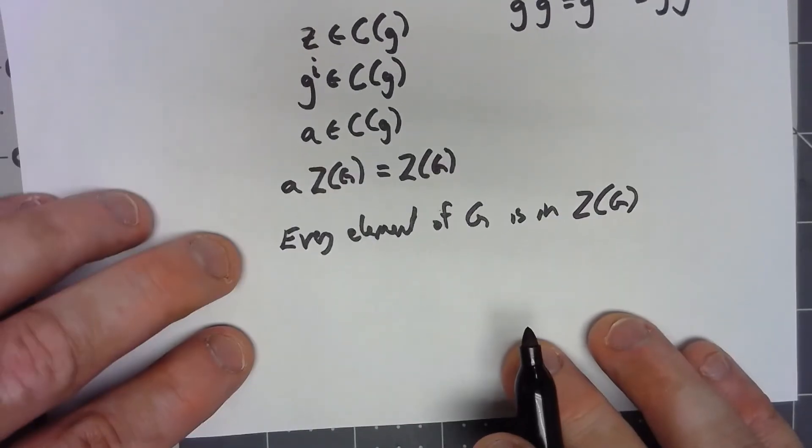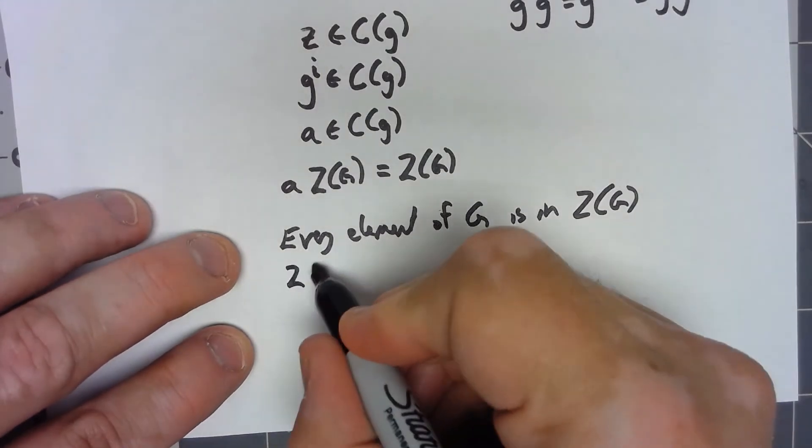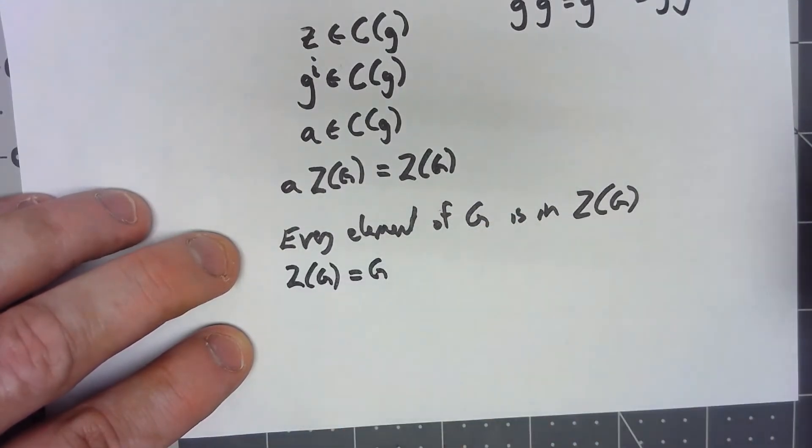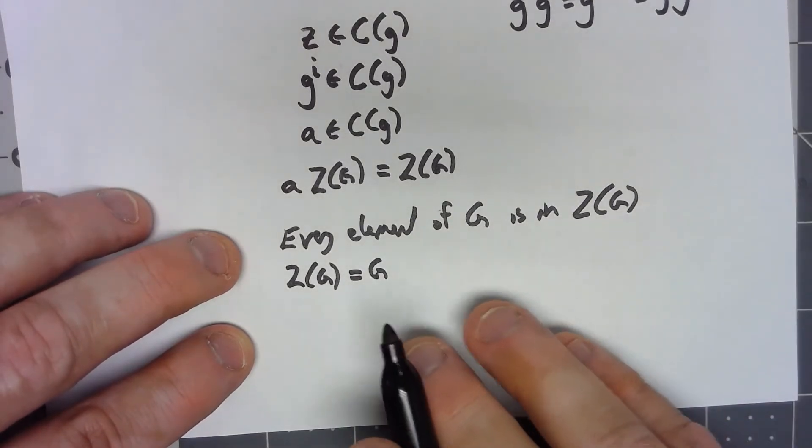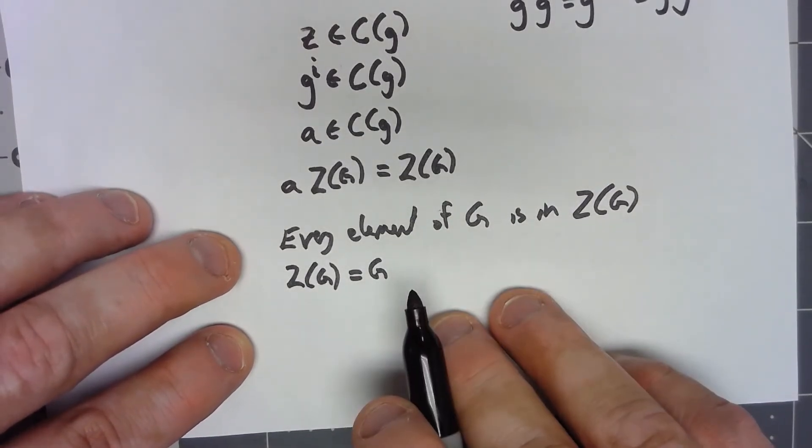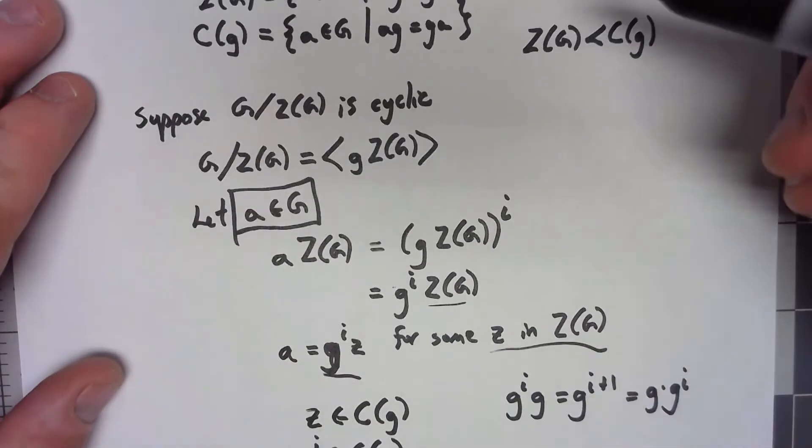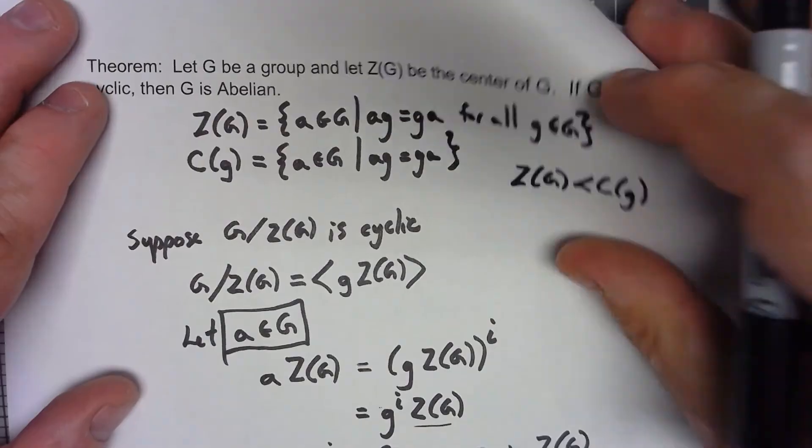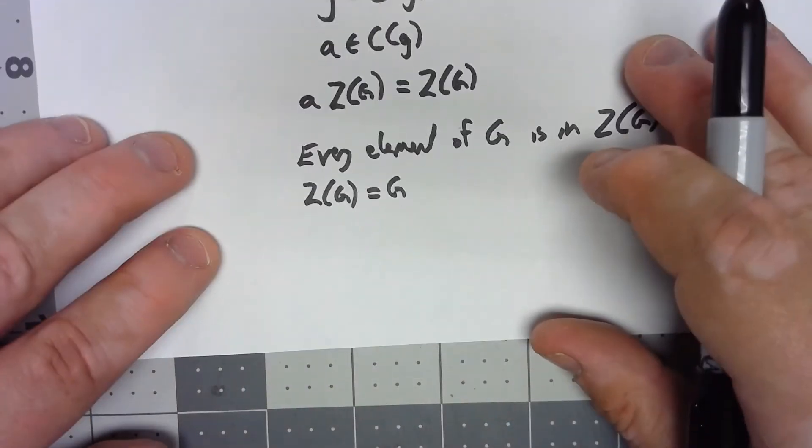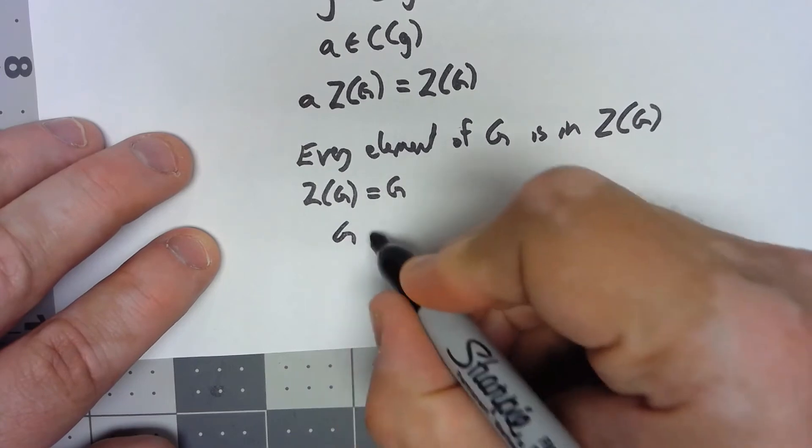So that says that the center of G is equal to G. But wait a minute, the center of G was the elements that commuted with everything in G. If everything in G commutes with everything in G, that says that G is abelian.